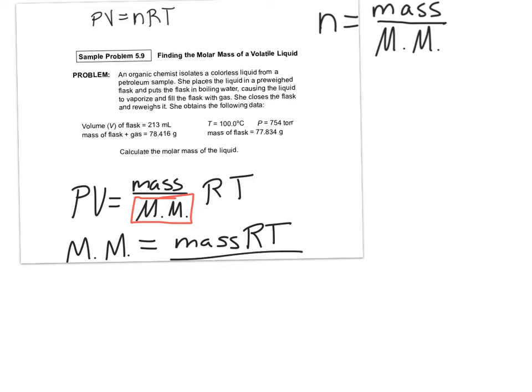Which we know all of these things. So the mass of the sample or the mass of the gas that we're interested in here is going to be the difference between the mass of the flask and then the mass of the flask with the gas in it. So we're going to have 78.416 minus 77.834, and I got 0.582 grams for the mass.